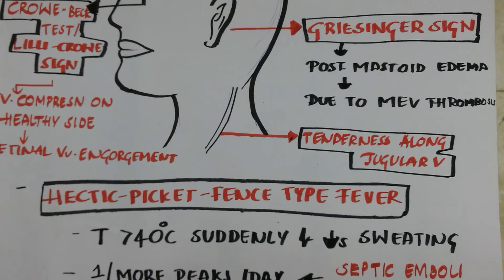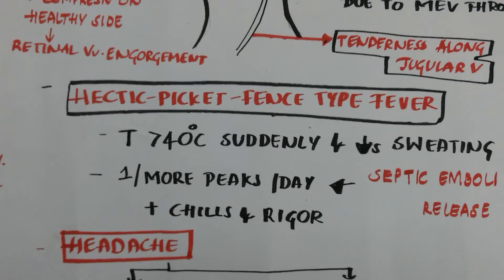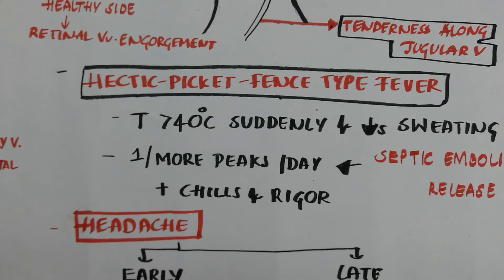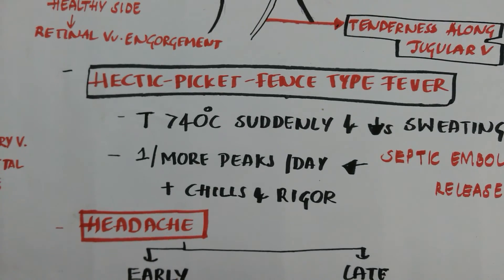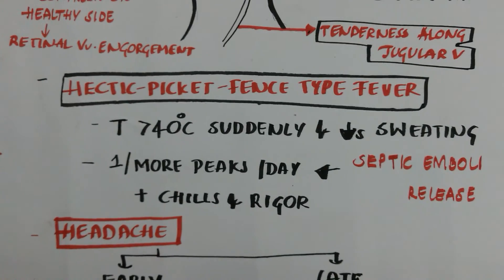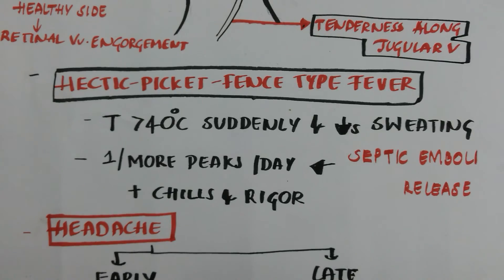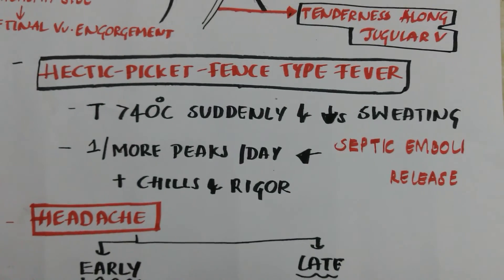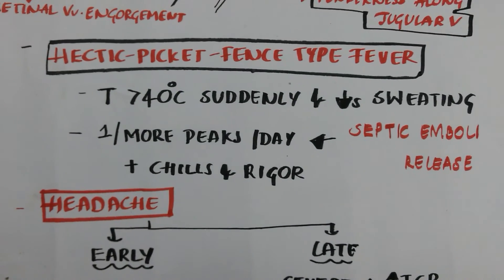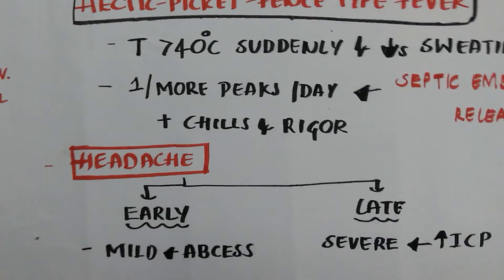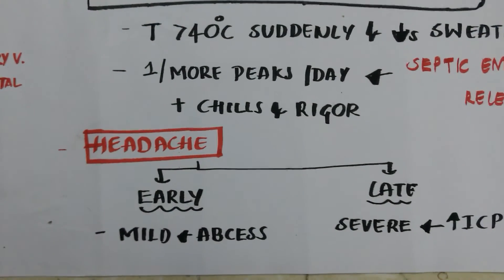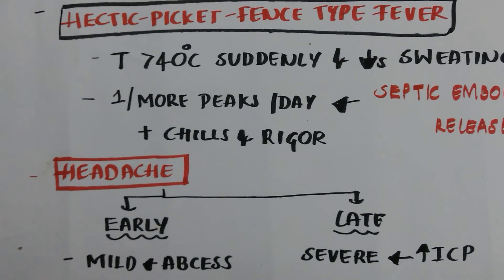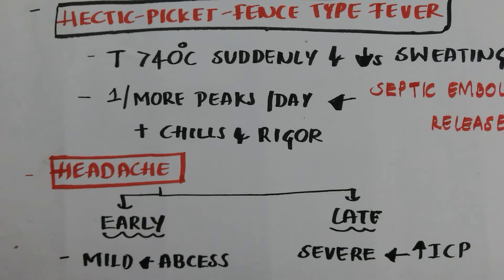Tenderness along the jugular vein and fever are also present. The fever is hectic, picket-fence type — temperature raises above 40 degrees centigrade suddenly and decreases with profuse sweating, with one or more peaks per day due to septic emboli release, accompanied by chills and rigors. Headache is mild in early stages due to the abscess, and severe in late stages due to increased intracranial pressure.